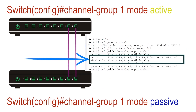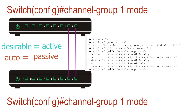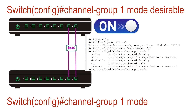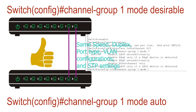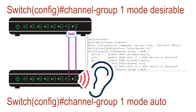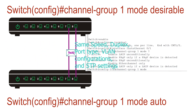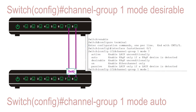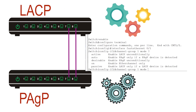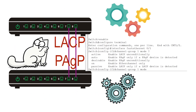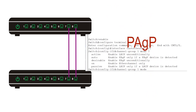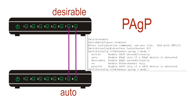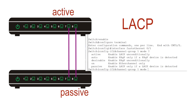PAGP uses desirable and auto options. The desirable mode is similar to LACP's active mode — the switch enables PAGP and sends PAGP hello messages. In auto mode, it listens for PAGP hello messages; if received and parameters match, it enables PAGP, otherwise it keeps the port in the listening state. This ensures all ports use identical configurations. Functionally, LACP and PAGP are the same — use whichever you prefer. If you have all Cisco switches, use PAGP; otherwise use LACP. Configure one side as desirable and the other as auto for PAGP, or one side as active and the other as passive for LACP.